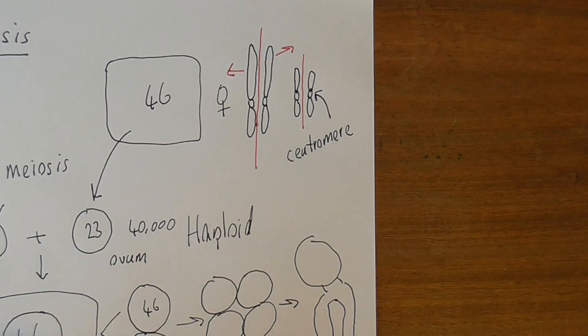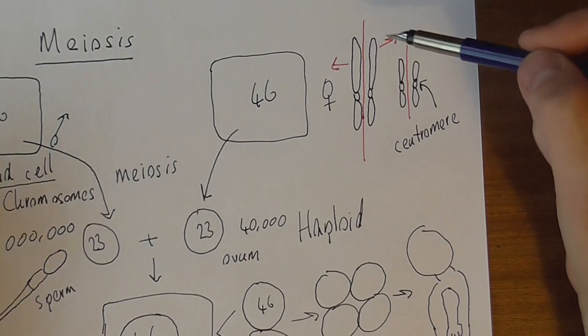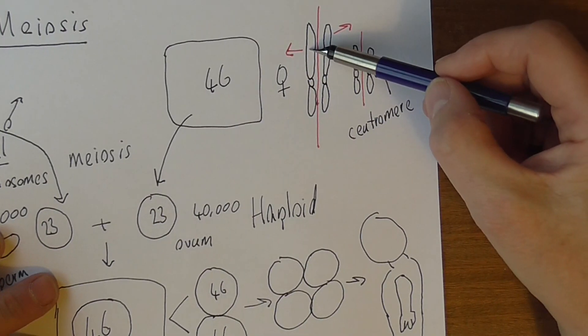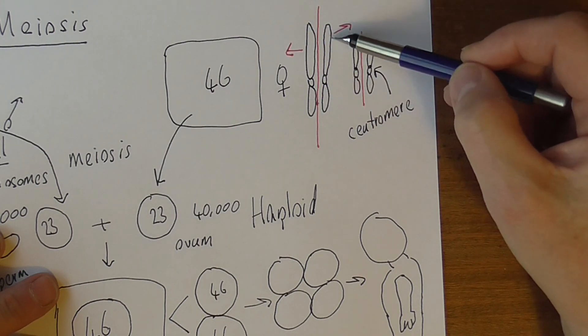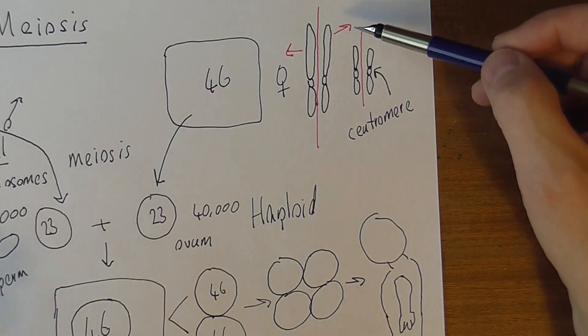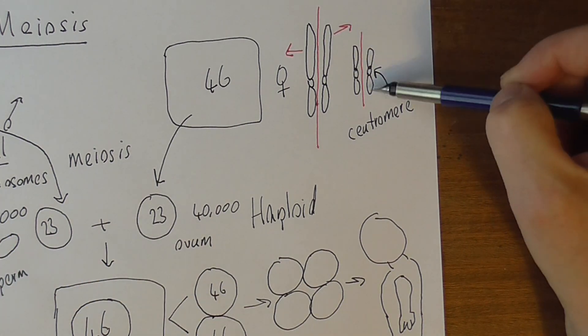Actually it doesn't quite work like that in females, because only one is preserved. But in males it works like that. One chromosome will go into one sperm from that pair, and this chromosome from the same homologous pair will go into the other sperm. And it's the same here.